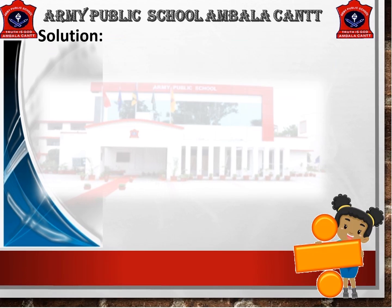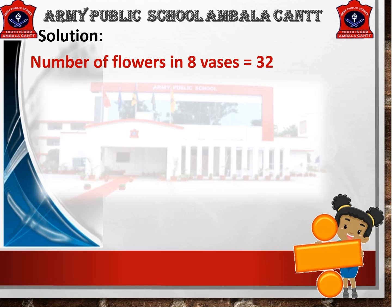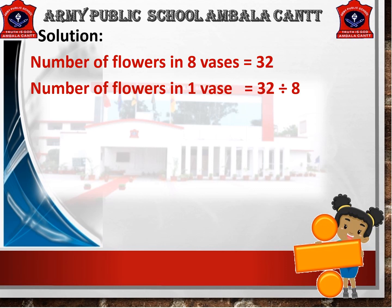Let's find the solution. Number of flowers in 8 vases is equal to 32. Number of flowers in 1 vase is equal to 32 divided by 8. To divide 32 by 8, first arrange the digits as shown on the screen. Now, read the table of 8.